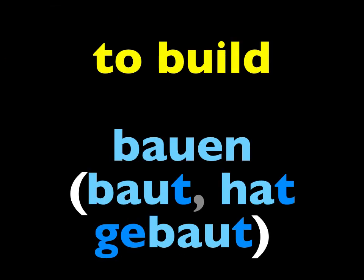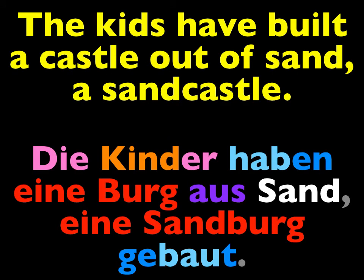Repeat the verb to build: bauen. The er form is er baut, and the past tense is er hat gebaut. It's a weak verb. Say: the kids have built a castle out of sand, a sandcastle. Notice how the past participle is at the very end of the sentence, as is usually the case with this tense.